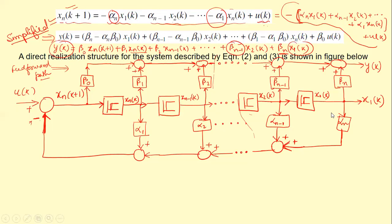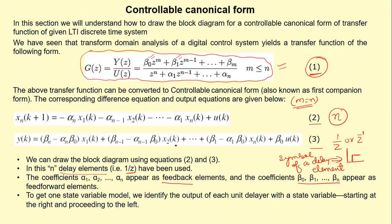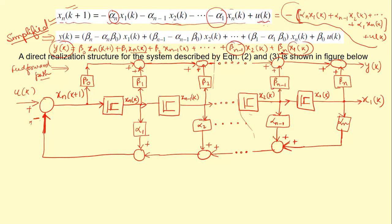This concept should now be clear. The block diagram shows the complete picture of what we have studied — everything has been done in this manner, with x_n(k+1) as the key state update. In this lecture we have understood how to obtain and draw the block diagram of a transfer function through the controllable canonical form by converting it into state space representation. This was all about today's lecture.